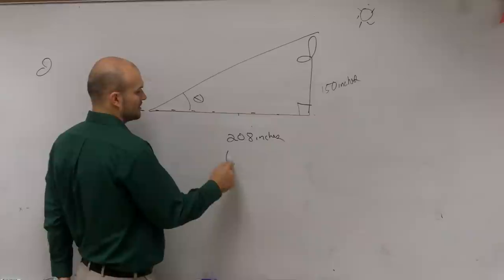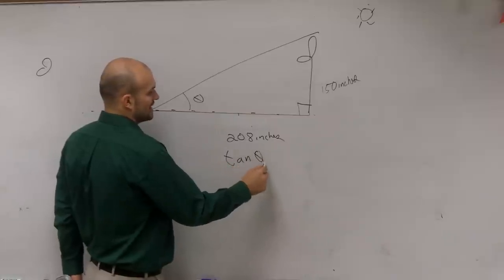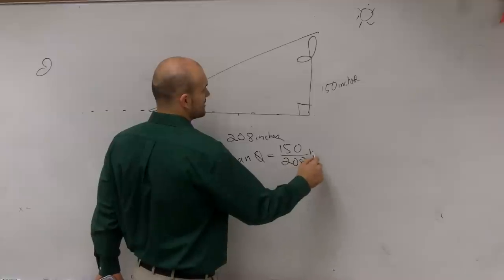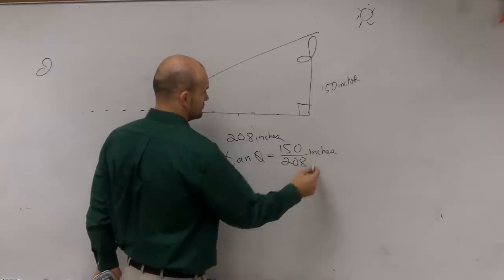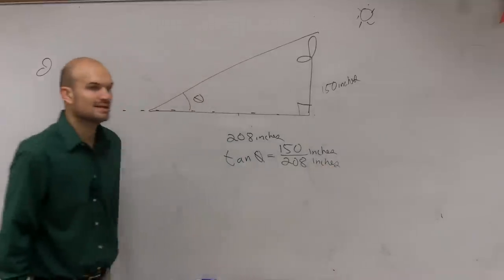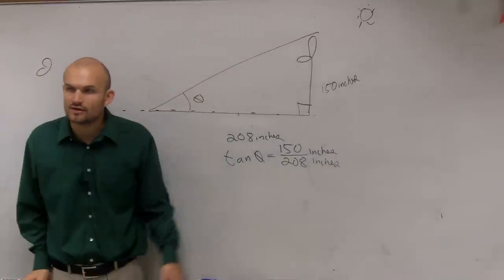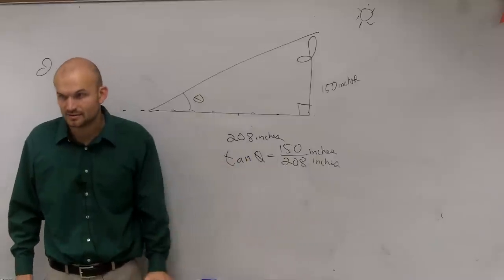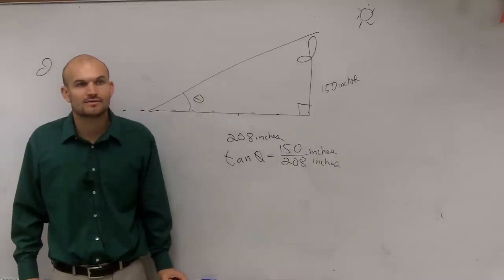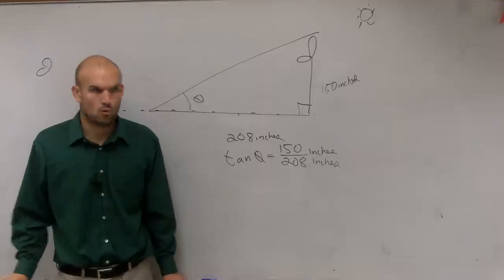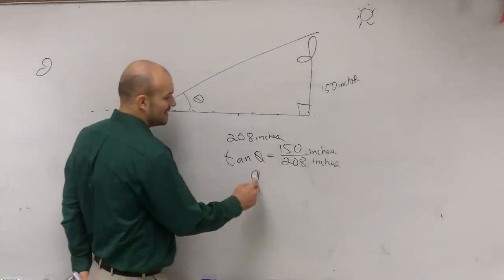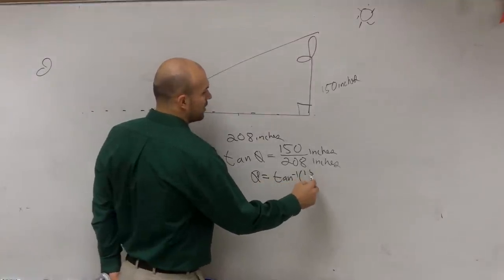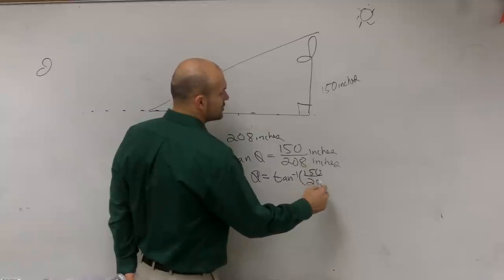So therefore, I can say tangent of theta is equal to 150 over 208 inches. But ladies and gentlemen, what are we trying to figure out? They're trying to find this angle of elevation. So how do we rewrite this to find theta? Anybody have an idea? You write theta equals inverse tangent of 150 over 208.